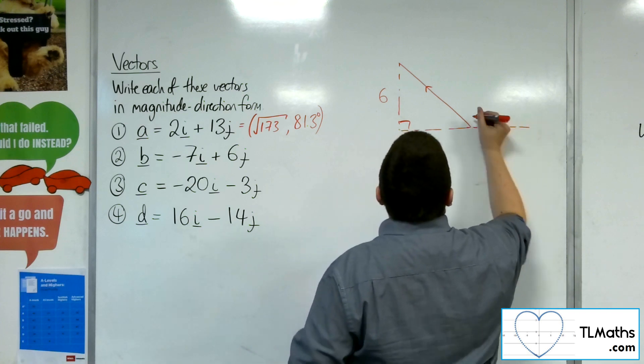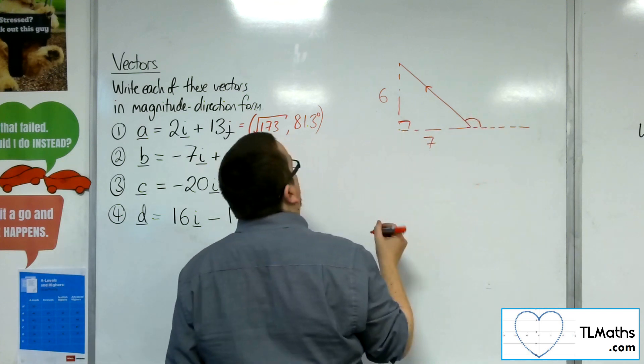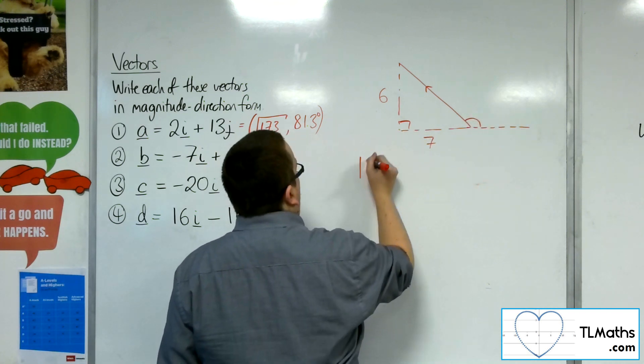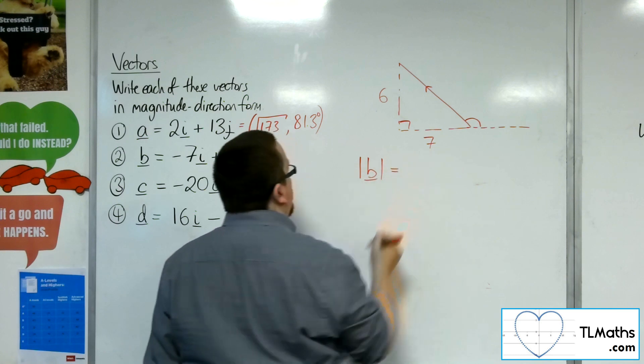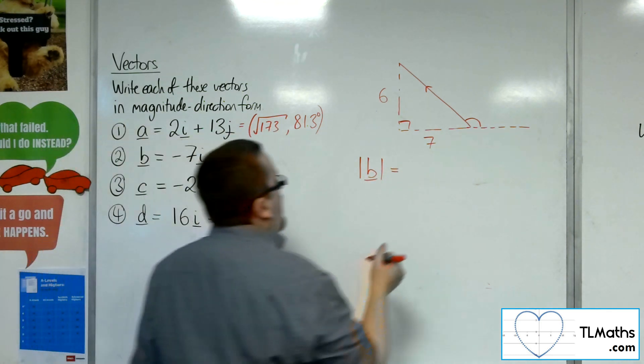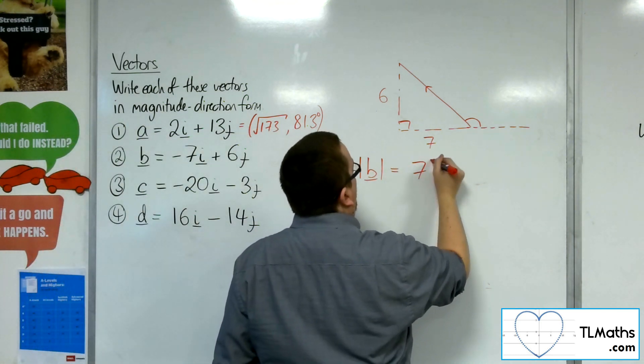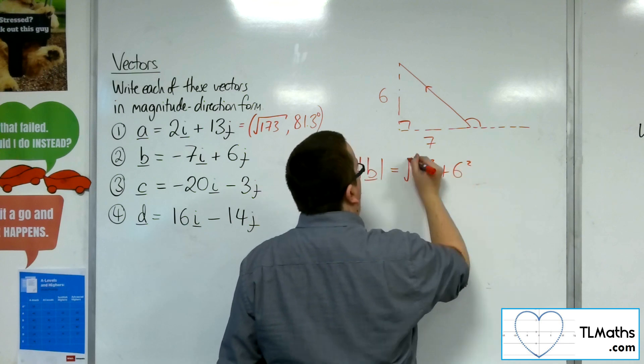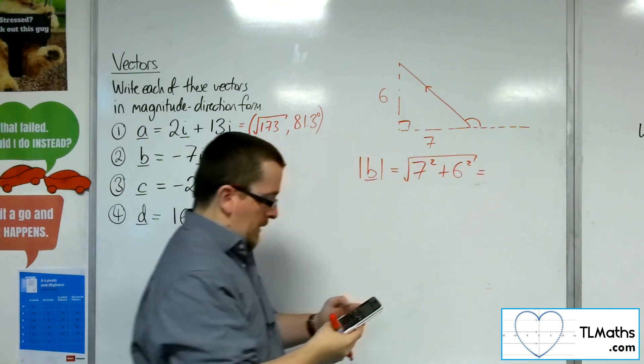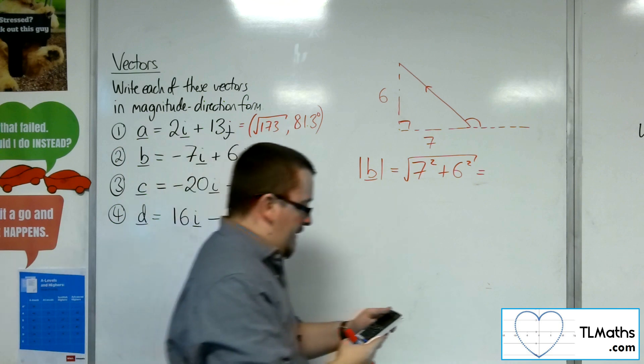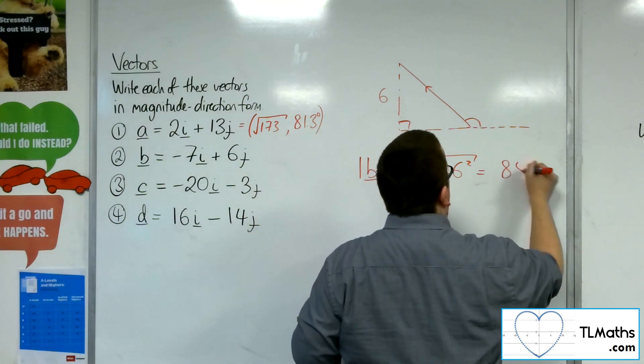If I draw in the x-axis, I'm going to want to find that angle. So the length of b, the magnitude of b, will be equal to the square root of 7 squared plus 6 squared. So square root of 49 plus 36, so root 85.